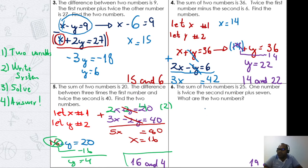The sum of two numbers is 25: x plus y equals 25. One number is twice the second number plus seven. That means x equals 2y plus 7. Here's my equation.